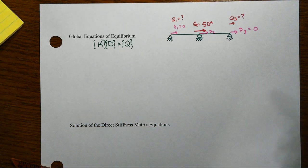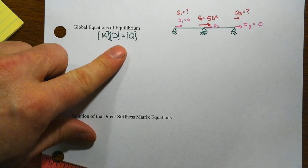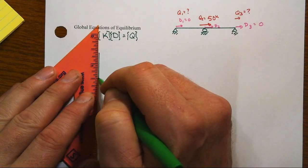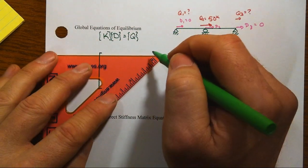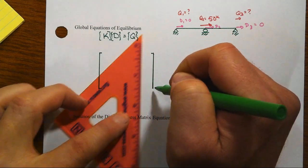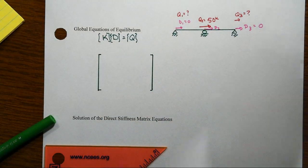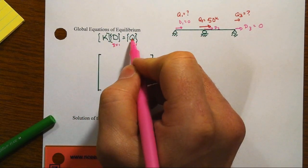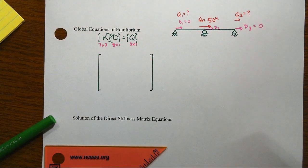Let's expand this out in all its grand glory. We've got a system with three degrees of freedom, so that's a 3 by 1 nodal displacement vector, a 3 by 1 nodal force vector, and the stiffness matrix is 3 by 3.